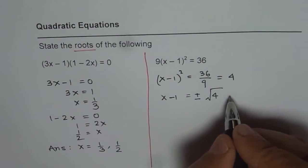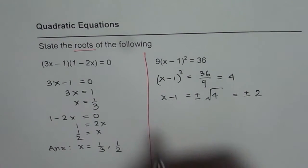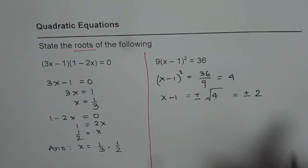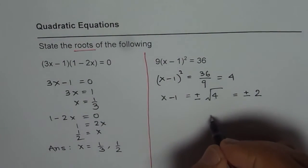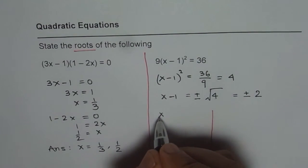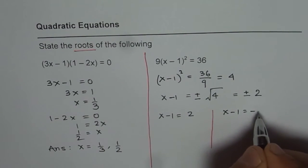So that gives us, if I write plus and minus, there are two possibilities. Square root of 4 is 2, so x minus 1 could be either plus 2 or minus 2. So we have two solutions. So let me do them separately. First is when x minus 1 equals plus 2, the second one is x minus 1 equals minus 2.